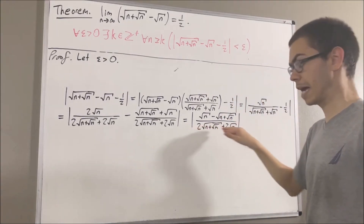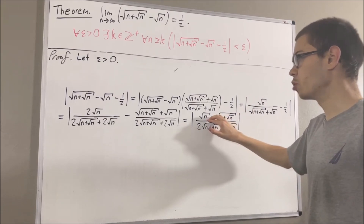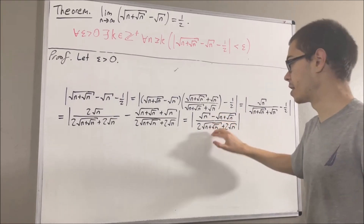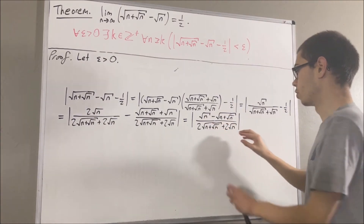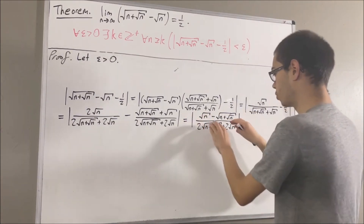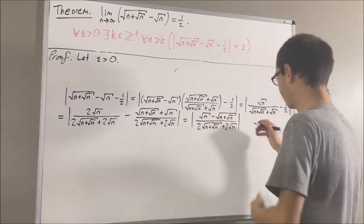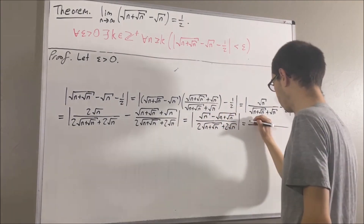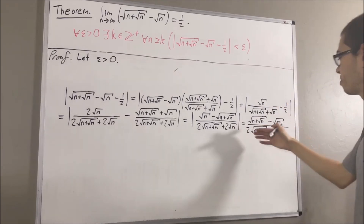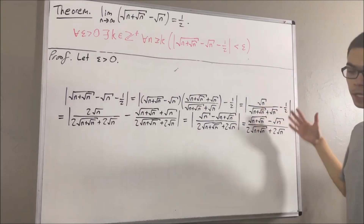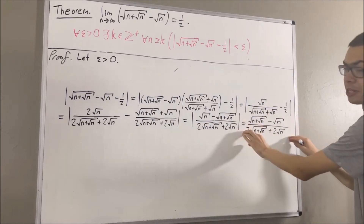Now, at this point, we're going to remove the absolute values. Notice the numerator is negative and the denominator is positive. So to remove the absolute values, all we have to do is swap these two terms in the numerator. So just like that — now the numerator is positive and the denominator is positive.